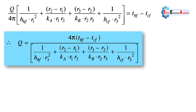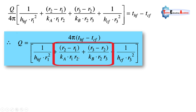Our objective is to derive the equation of heat transfer for composite sphere. Rearranging for Q: Q equals 4π times (thf minus tcf) divided by the sum of all resistances. In the denominator, 1/(hhf·r1²) is the convective resistance at the inner layer, 1/(hcf·r3²) is the convective resistance at the outer layer, and the remaining terms are the thermal resistances of layers A and B respectively.